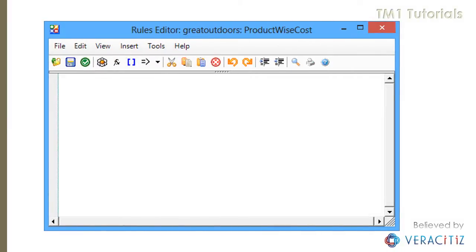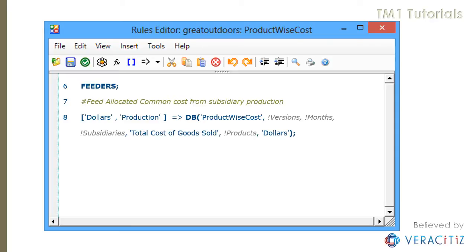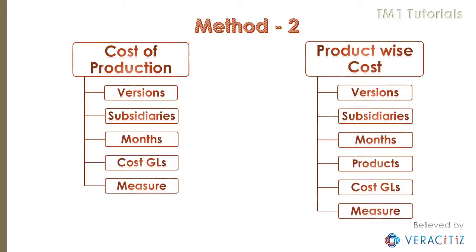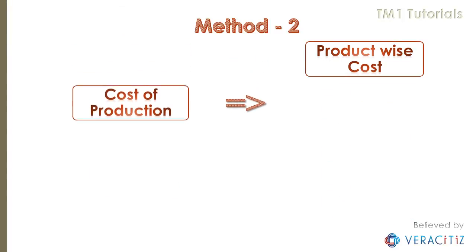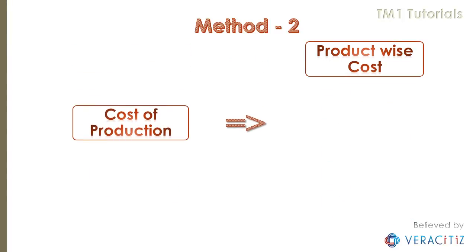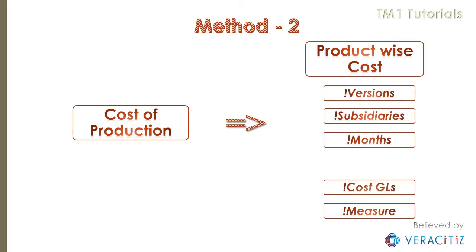The TM1 rule scripts in this scenario will look like this. Method 2: feed allocated cost from cost of production. In this scenario, the cost of production will feed the total of the products.